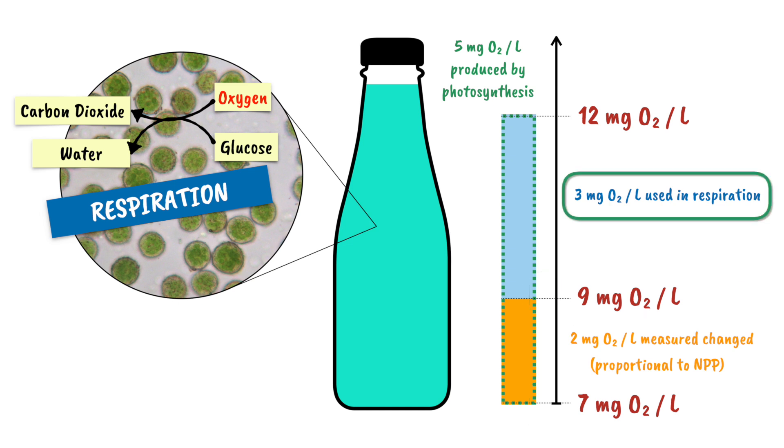But how do we go about measuring the losses due to respiration? We know the respiratory losses in this bottle are 3 mg of oxygen per litre over 24 hours, because I said it was in this example that I made up, but I would have no way of actually measuring this if this were a real bottle exposed to light carrying out photosynthesis.